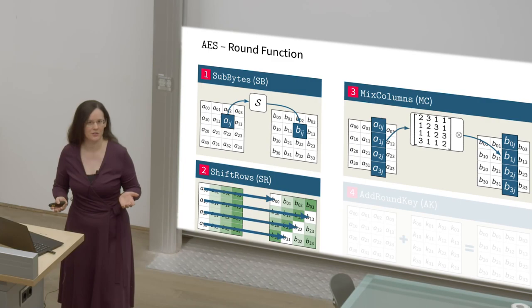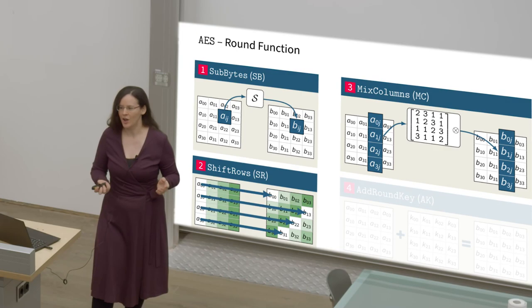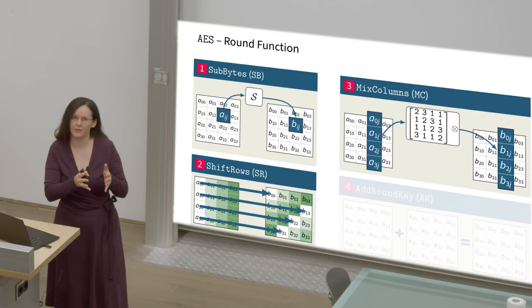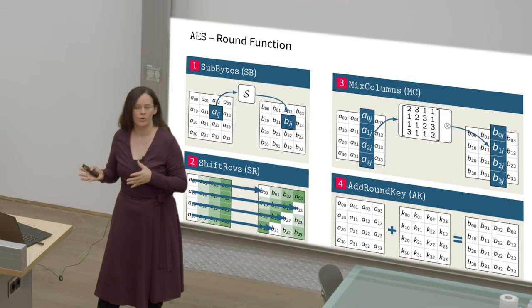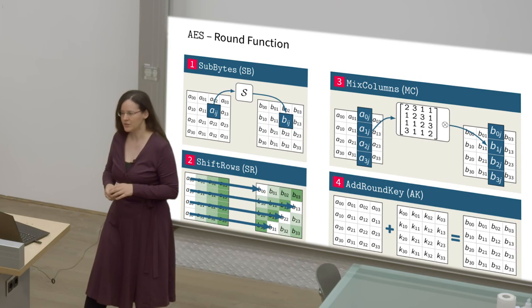MixColumns is responsible for mixing stuff within one of these matrix columns. It does that by interpreting the column as a column vector and multiplying it with a 4x4 matrix which is specified here. And the last and very important operation is the AddRoundKey operation. It takes the round key, which is derived from the real key, and XORs it to the state, in order to make this whole operation dependent on the secret key.